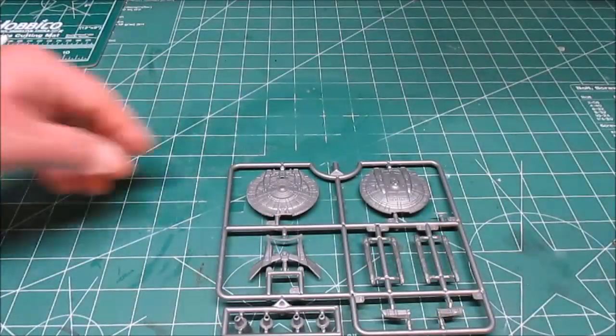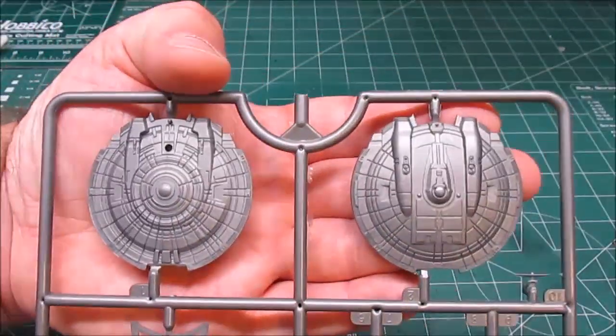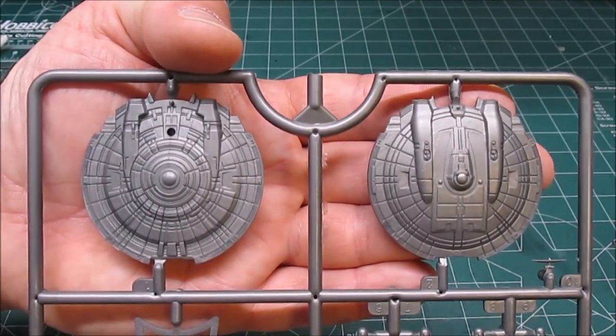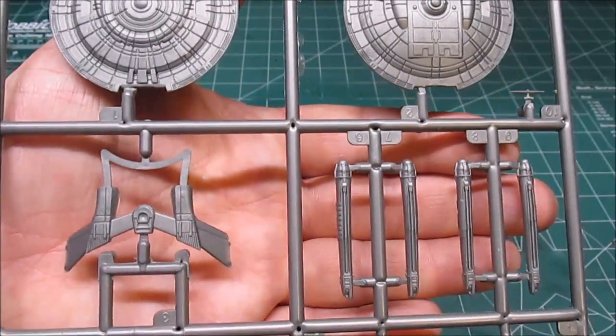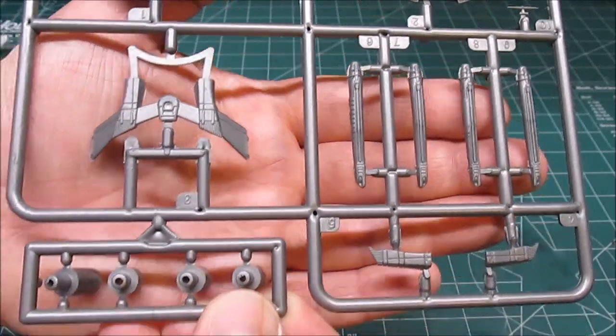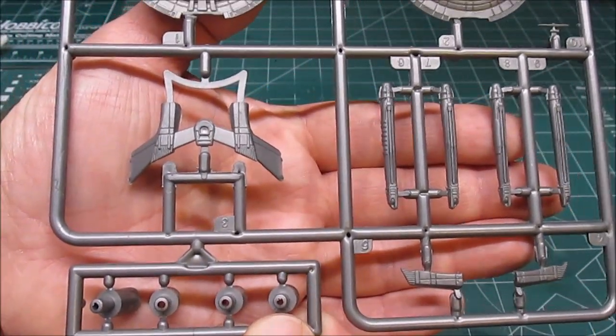And I like that they'll all be able to be displayed together. No warping, no funny business. Let's check out the NX-01, molded in that metallic plastic. Beautiful.